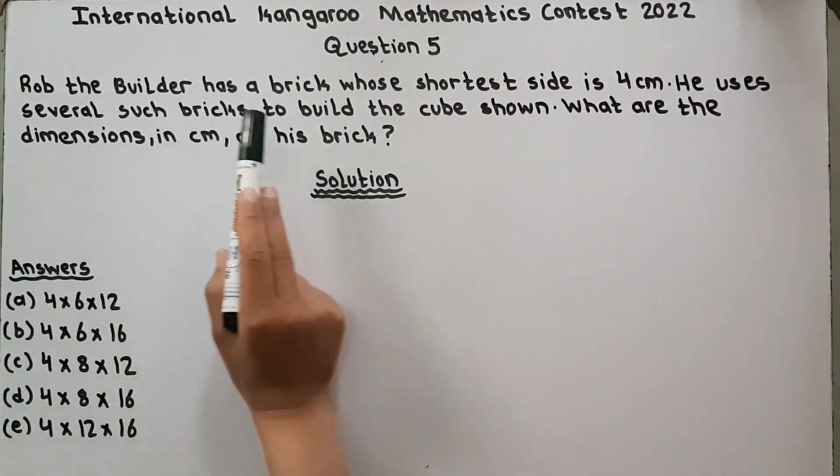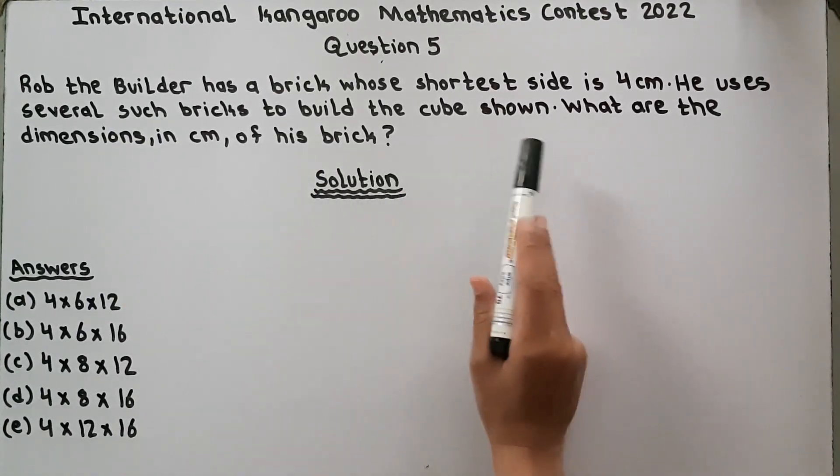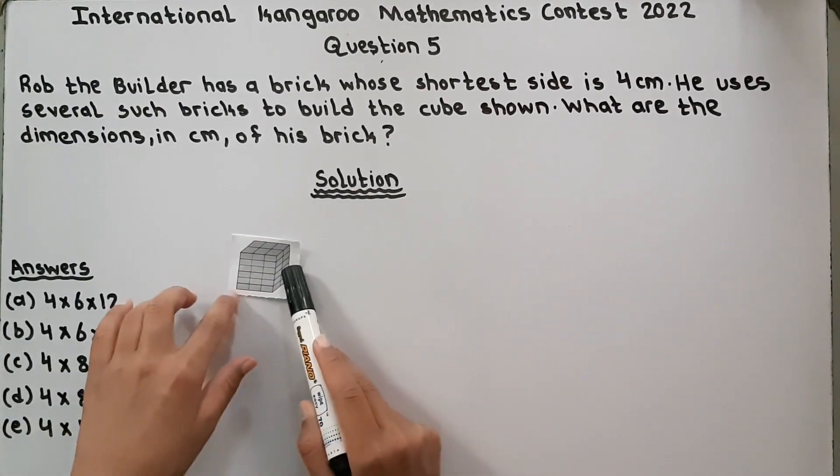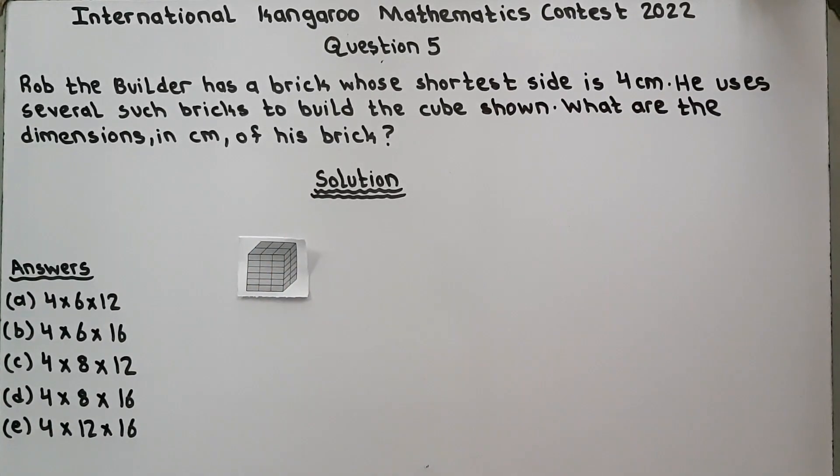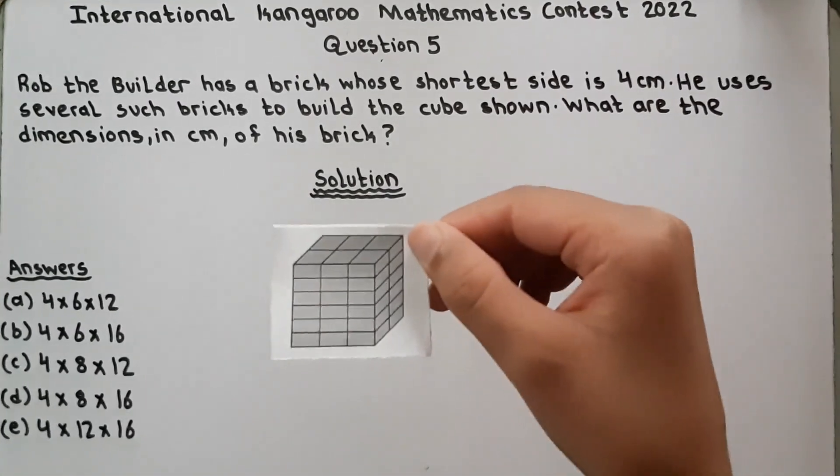Rob the builder has a brick whose shortest side is 4 cm. He uses several such bricks to build the cube shown. What are the dimensions in centimeters of his brick? So there was a builder named Rob who had a brick, and of that brick's shortest side was 4 cm. He used several such bricks to build this cube.